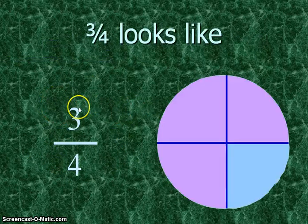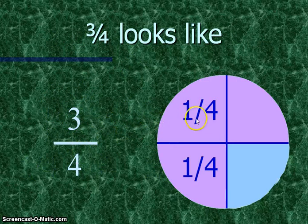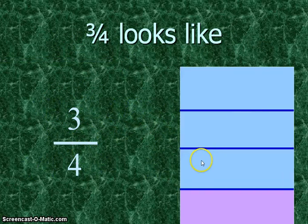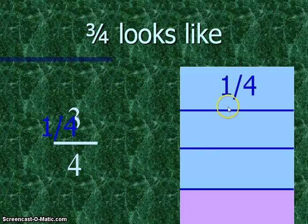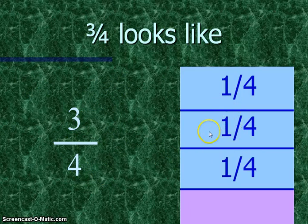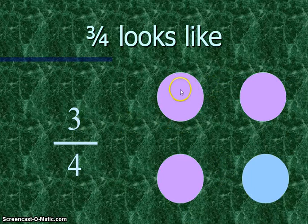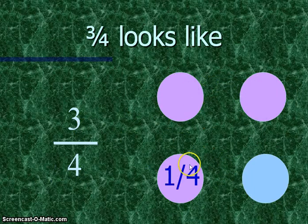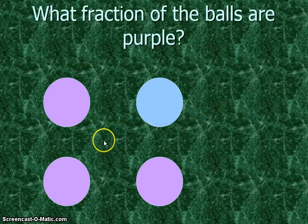Now we will see how 3 by 4 looks. The 3 by 4 will look like 1 by 4, 1 by 4, and 1 by 4. This is 3 parts. So 3 by 4 is 1 by 4 part 1, 1 by 4 part 2, 1 by 4 part 3. If you add all 3 parts, you will get 3 by 4.